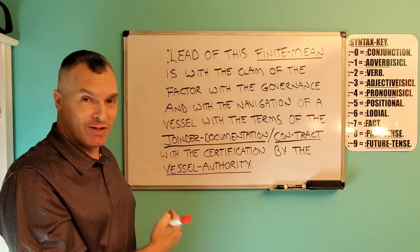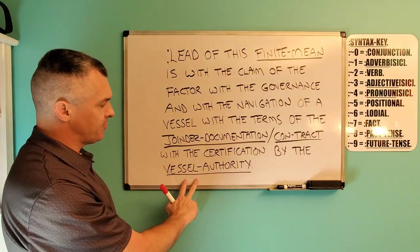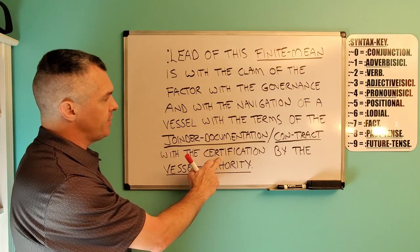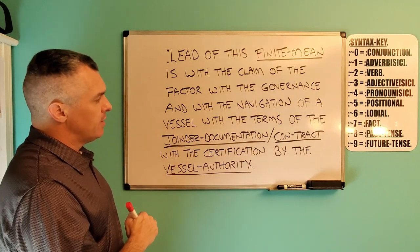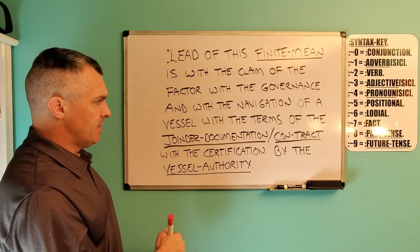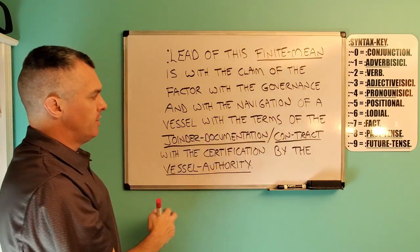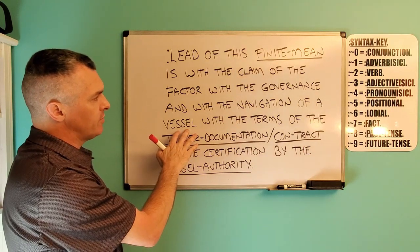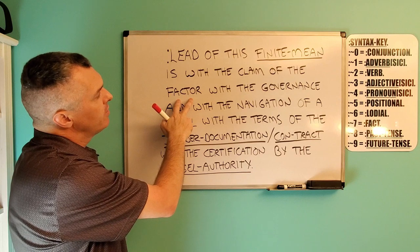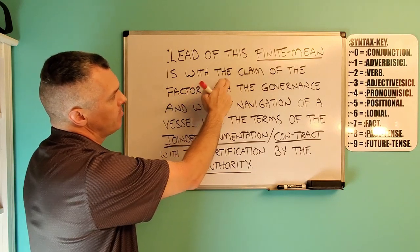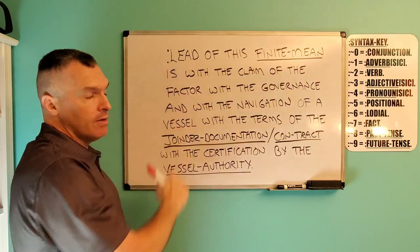Possessive of the certification, with the authority of the vessel. Backwards, the cause would be vessel authority. And the vessel authority is concerned with the certification. Then we can drop our verb of thinking in because we're going along that straight line — we've already put our two facts in. And we go into the possessive of the claim, which would be with the joinder documentation and contract, concerned with the terms. Then the possessive of the vessel — concerned with governance and navigation. Possessive of the factor, concerned with the claim. Possessive of the finite mean, possessed by the lead, which is the authority, because this is the finite mean of this work.